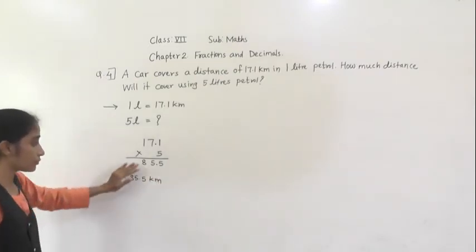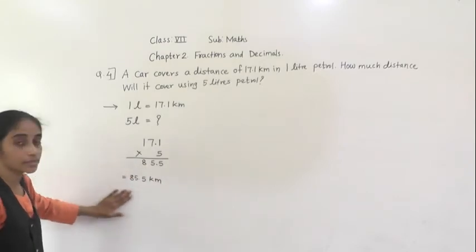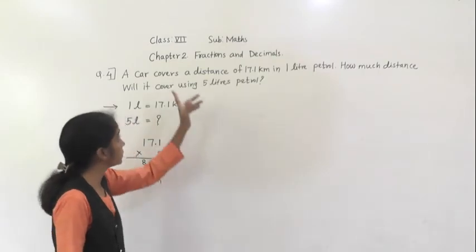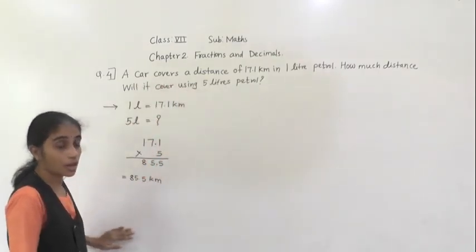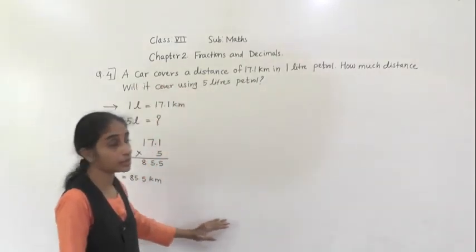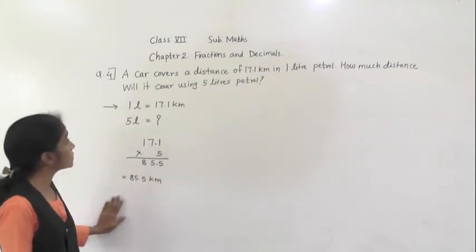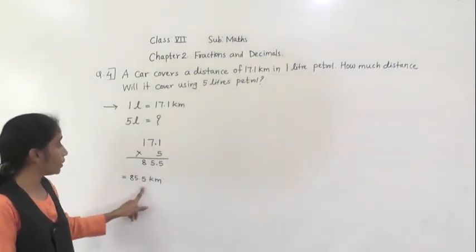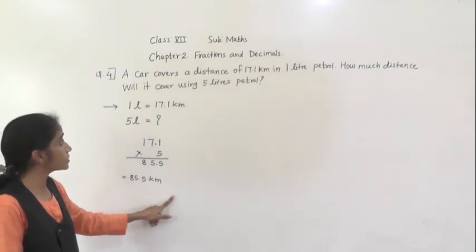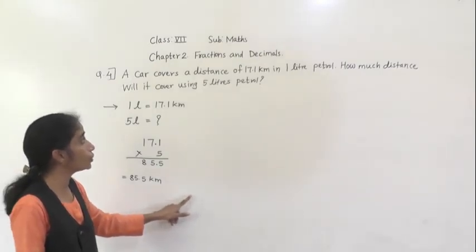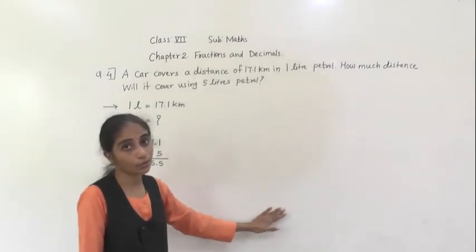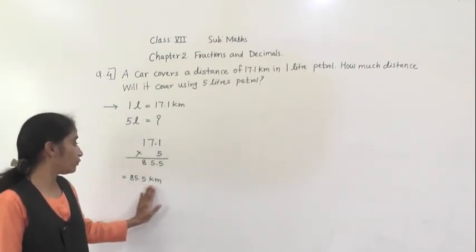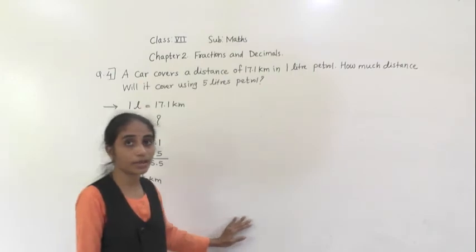So what will you write for the answer? After getting this answer, you have to write in the sentence — this is a word problem. So after getting the answer, write in words: How much distance will it cover using 5 litres of petrol? 85.5 km distance covered using 5 litres petrol. Or: using 5 litres petrol, 85.5 km distance covered by car.